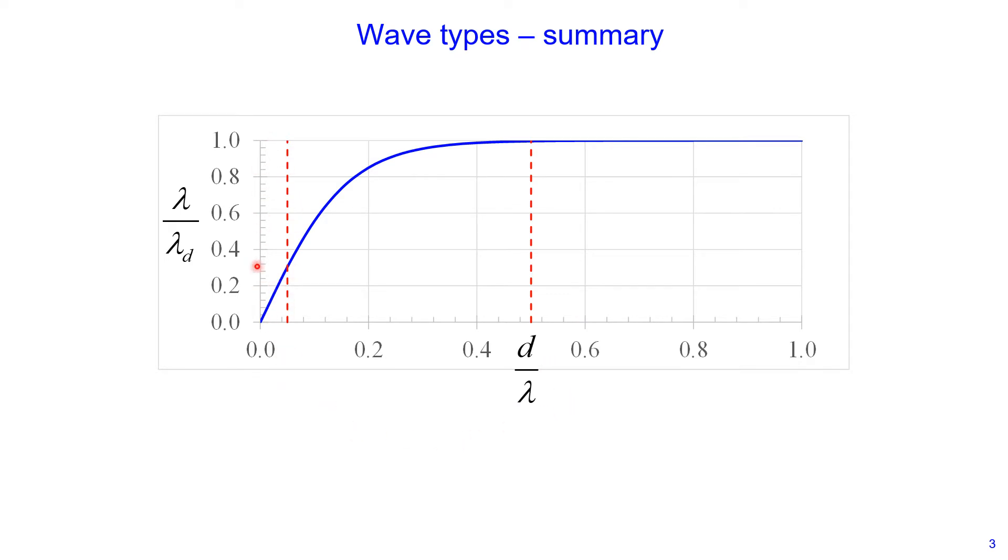So this is our shallow wave region, intermediate wave region, and this is our deep water region. For shallow waves the ratio of d divided by lambda is less or equal to 0.05. For intermediate waves, the ratio is between 0.05 and 0.5. And finally, for deep waves the ratio is greater or equal to 0.5.